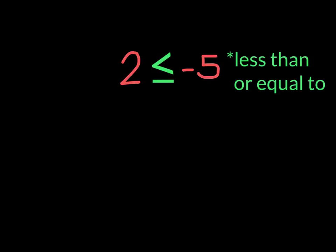This statement reads two is less than or equal to negative five. Well, two is not less than negative five. And two is not equal to negative five. Neither of these two statements apply, so it's considered to be false.